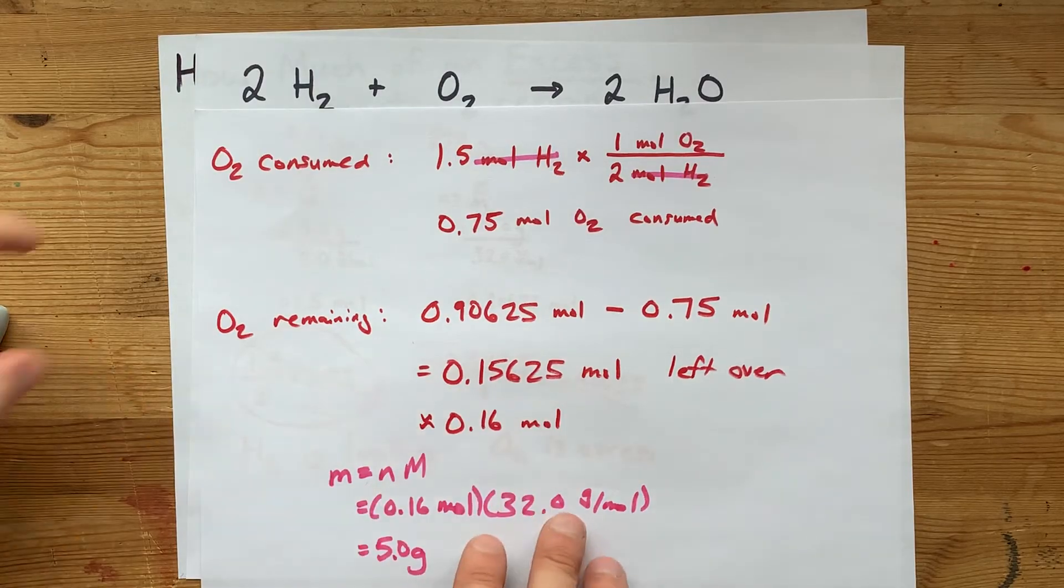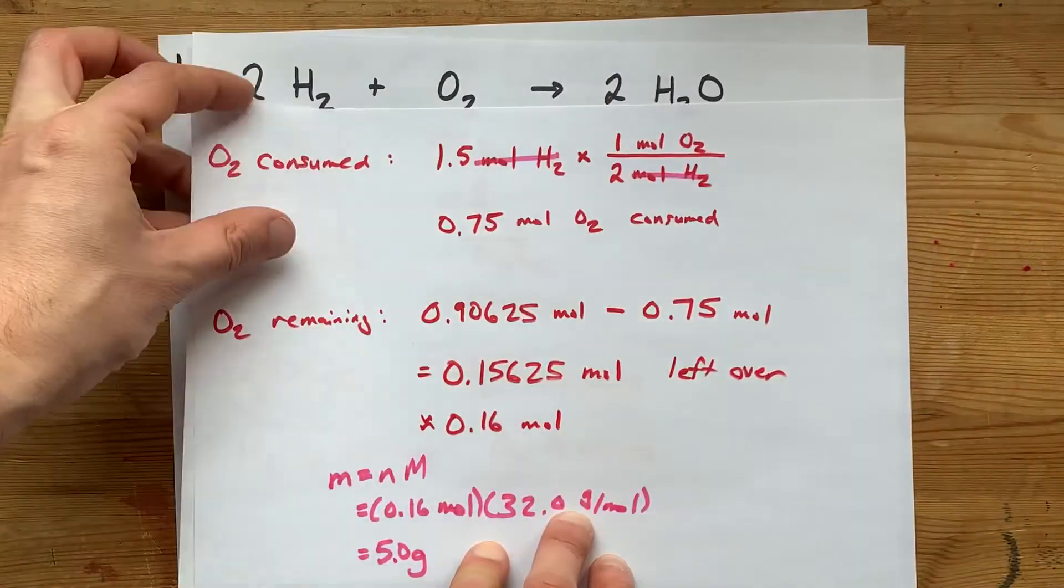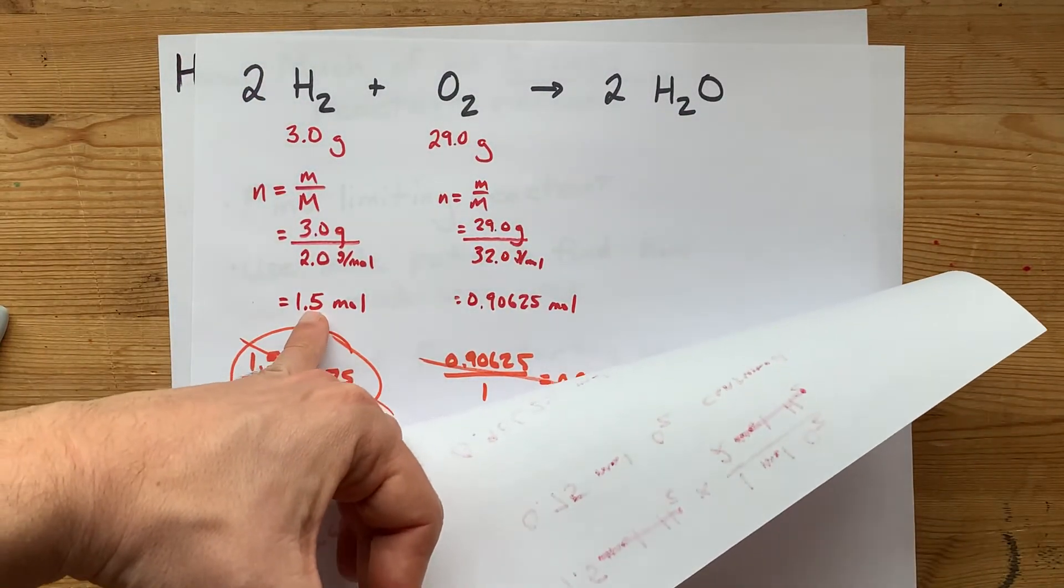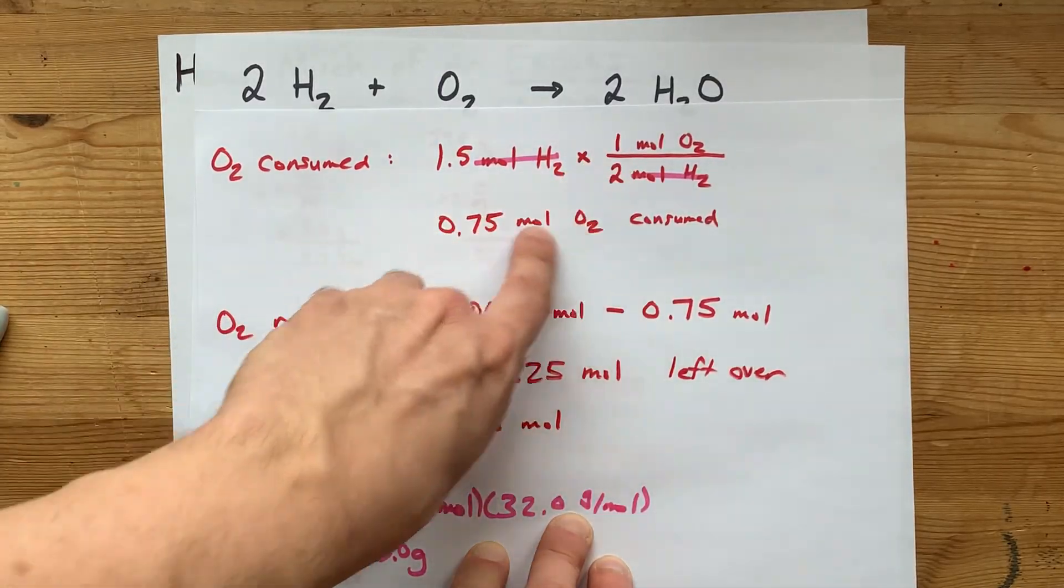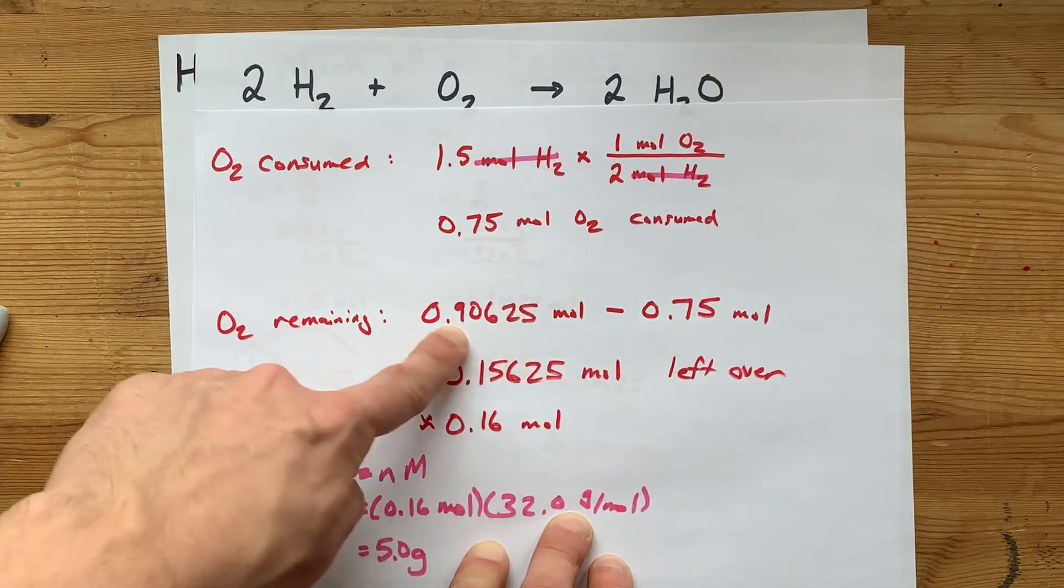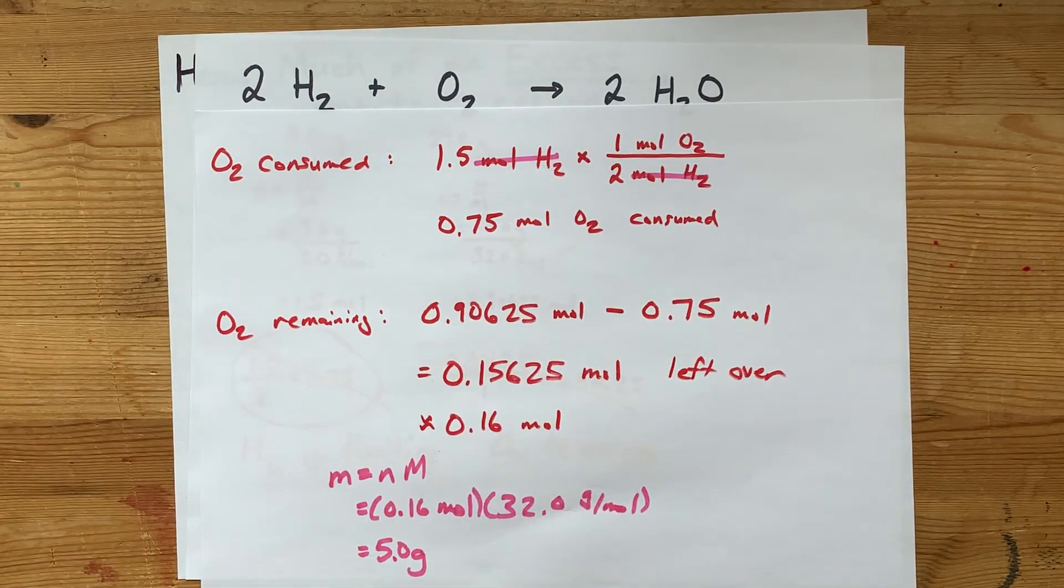But again, that was extra. What mattered to you is finding how much was excess by finding which one was limiting, using its number of moles and the mole ratio to get how much of the other thing was used, and then taking that away from how much you started with. Beautiful. Hope you liked it. Best of luck.